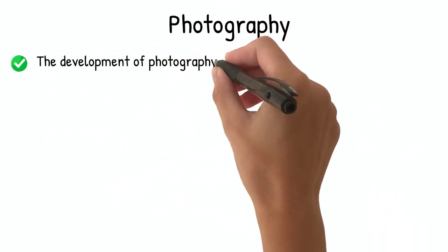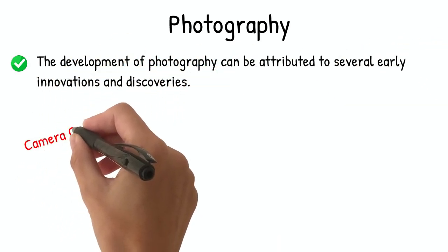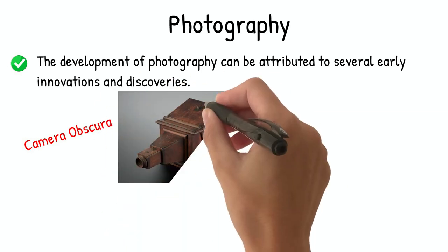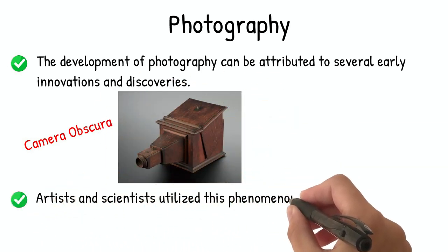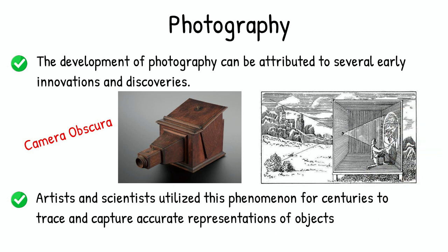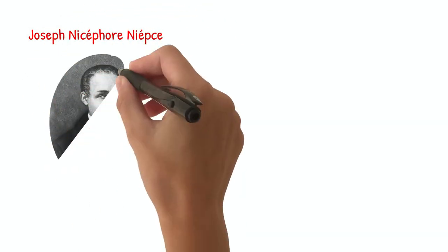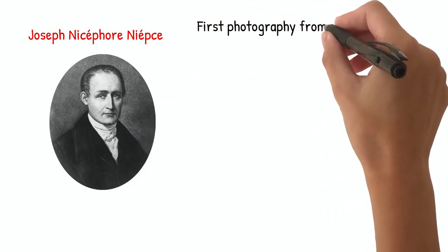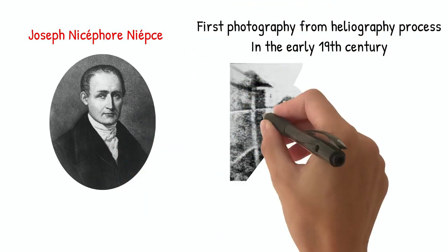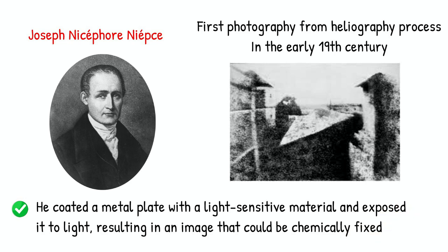The development of photography can be attributed to several early innovations and discoveries. One significant milestone was the discovery of the camera obscura, a device that allowed for the projection of an image onto a surface. Artists and scientists utilized this phenomenon for centuries to trace and capture accurate representations of objects. In the early 19th century, Joseph Nysfor Niepce successfully produced the first permanent photograph using a process called heliography. He coated a metal plate with a light-sensitive material and exposed it to light, resulting in an image that could be chemically fixed. This marked the first step towards modern photography.